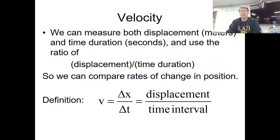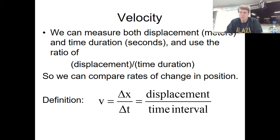For position, the rate of change of position with respect to the second is known as velocity. Velocity is equal to displacement divided by the time interval it took for that displacement to happen. At the bottom of the screen you see the definition: velocity equals delta x, which is the change in position, divided by delta t, which is the change in time.